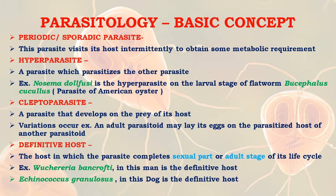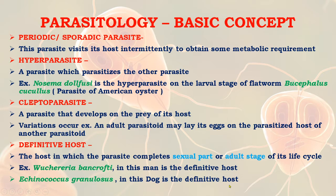The definitive host is the host in which the parasite completes the sexual part or adult stage of its life cycle. An example is Wuchereria bancrofti, a filarial worm, in which man is the definitive host. Another example is Echinococcus granulosus, in which the dog is the definitive host.